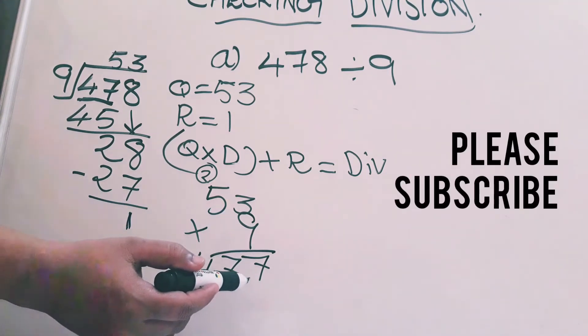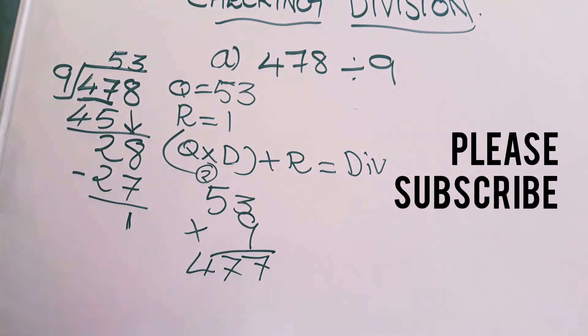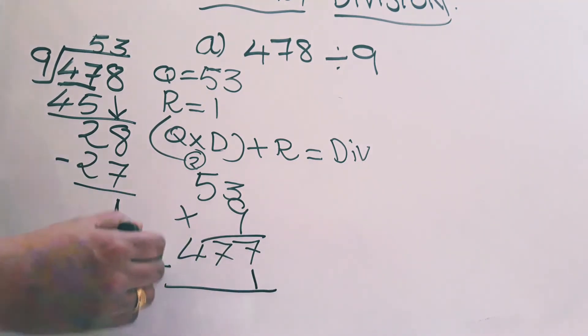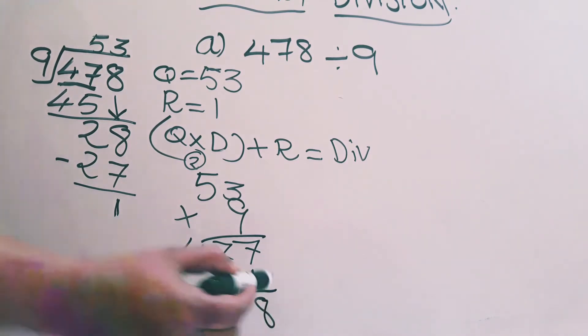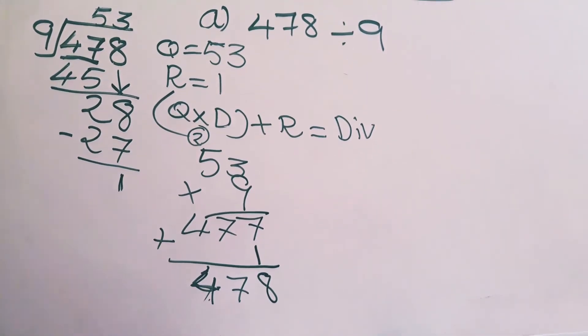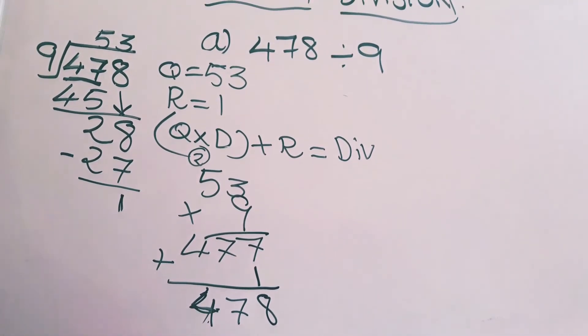But with this answer, we should do plus 1. 477 plus 1. Here itself we can do. You will get 7 plus 1 is 8, 7 only, then 4. 478. That means our dividend is also 478. After checking the division also, we got 478. That means our division is correct.